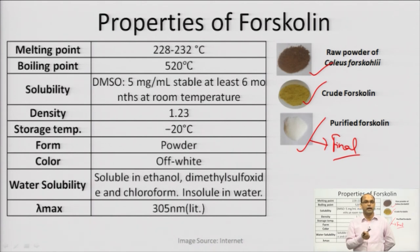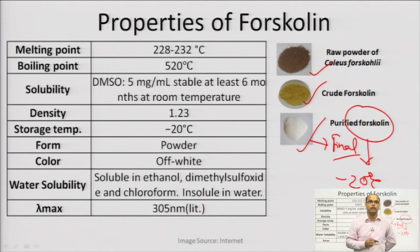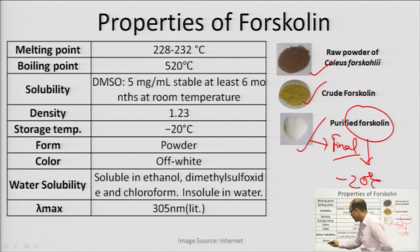Forskolin has a density of 1.23, making it heavier than water. Storage temperature for purified powder is minus 20 degrees Celsius. It occurs as a white crystalline powder and is generally insoluble in water but soluble in DMSO and ethanol. Lambda max is the UV wavelength at which Forskolin shows maximum absorbance under UV radiation.